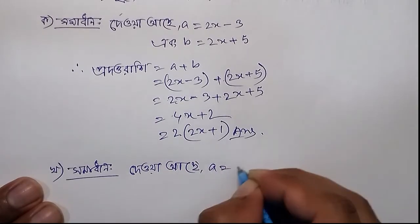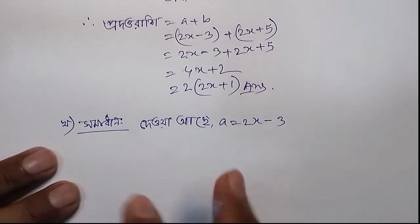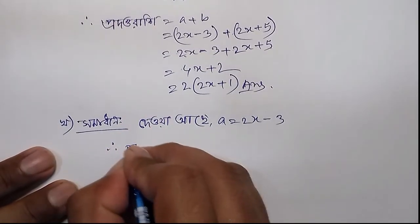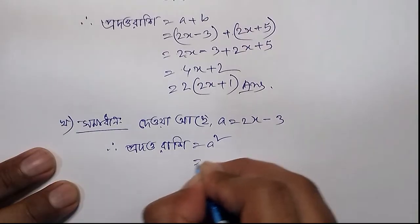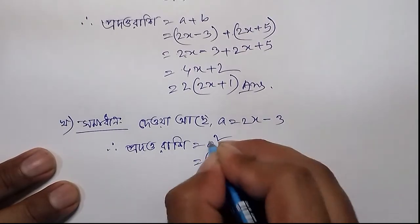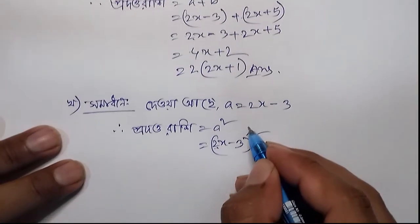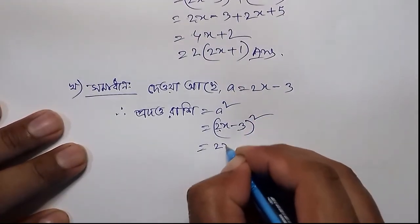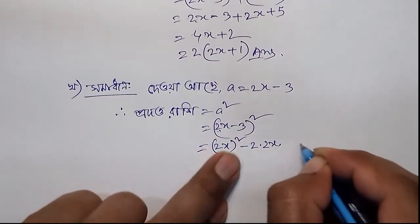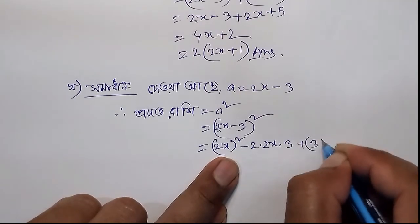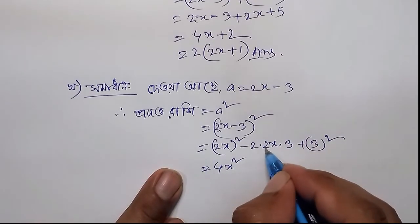Now for the second part: a is equal to 2x minus 3. We need to find a squared. So a squared is equal to (2x minus 3) squared, which expands to 4x squared minus 12x plus 9.